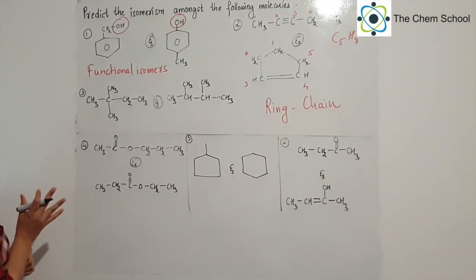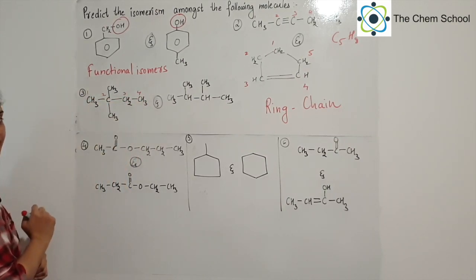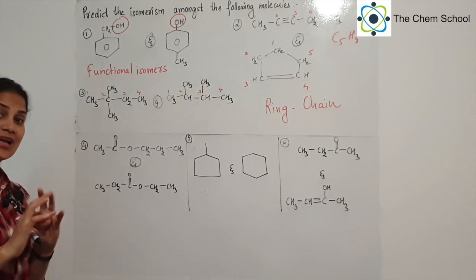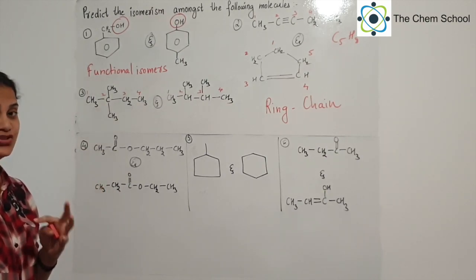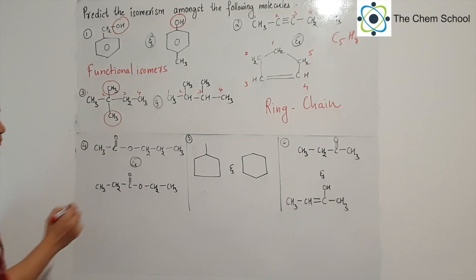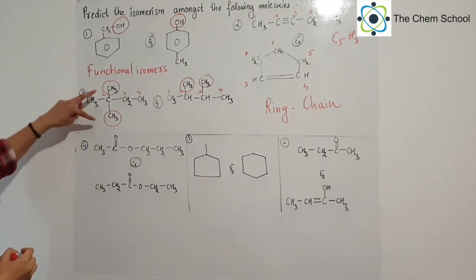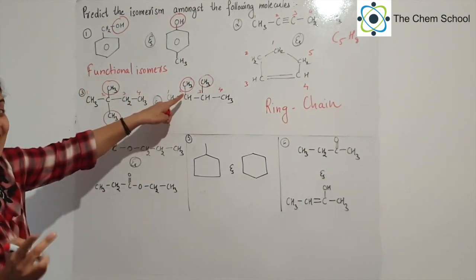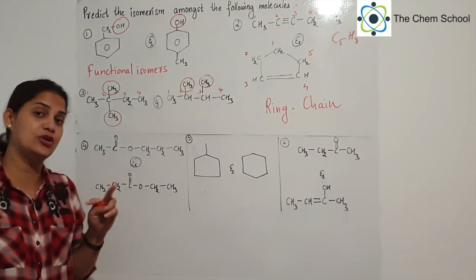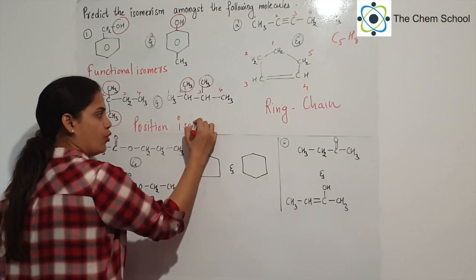For the third question, first of all you will distinguish what is different. Here you have 1, 2, 3, 4 carbons — similarly the other also has 4 carbons. The chain length is the same. But apart from that, check out the substituents. The carbon chain length is the same but the position of the substituent is different. Therefore you will say that these are position isomers.